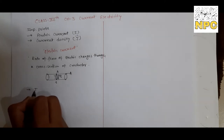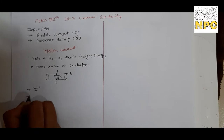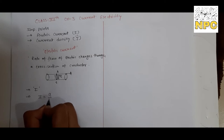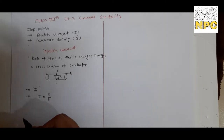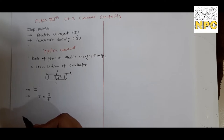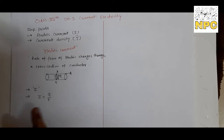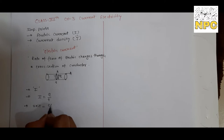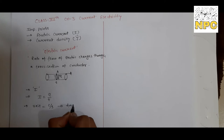Electric current is denoted by capital I, and its formula is I = Q/T. This Q/T is from the uniform cross-sectional area of the conductor - at all points it is uniform - so you can give the value of electric current through this formula. Now, for units: charge is in Coulombs, time in seconds, so the unit is Coulombs per second, which is called Ampere.